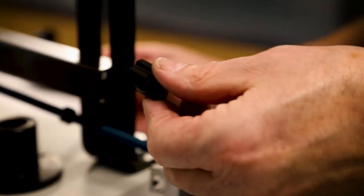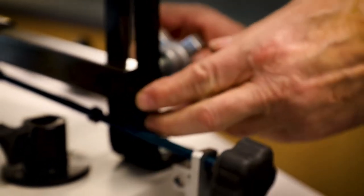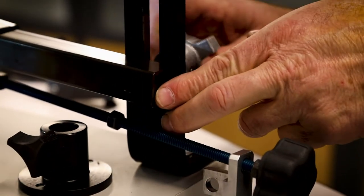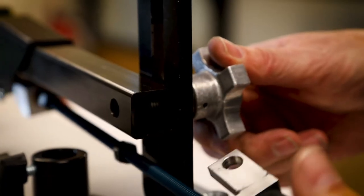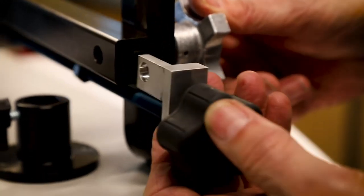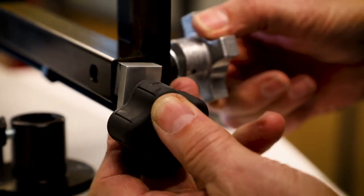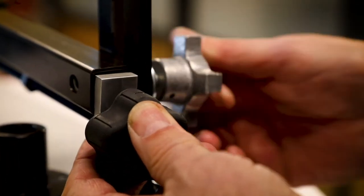Insert the slot nut into the reel bar and start threading the knob. Then insert the screw support into the bar. It will align with the slot nut and knob.